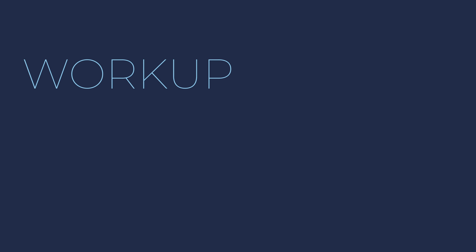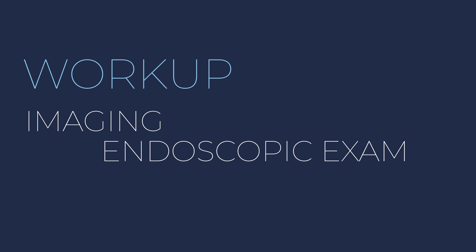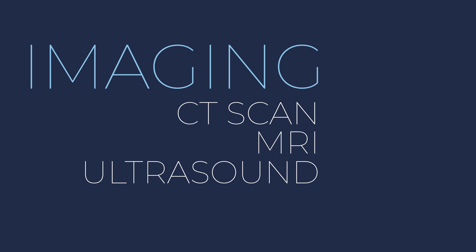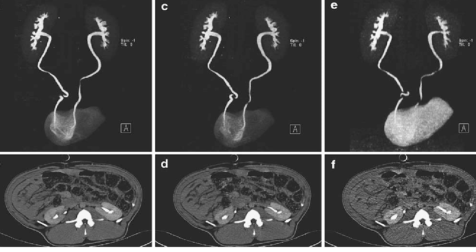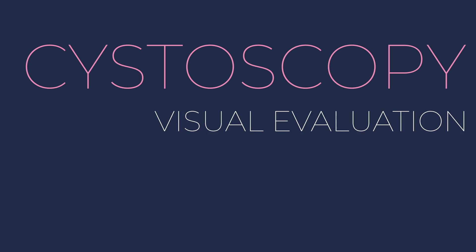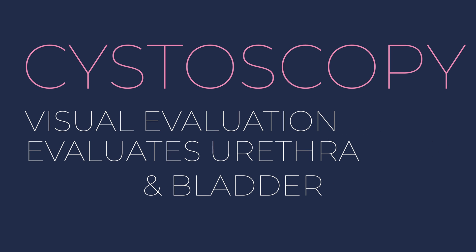Next, let's talk about the workup for hematuria. The workup consists of two important factors: imaging and an endoscopic evaluation with a camera. CT scan is the best imaging modality, but MRI or ultrasound can also be helpful — talk to your provider about which is best for you. These best evaluate the upper urinary tract, and here we can see a CT scan clearly outlining the anatomy quite well. The second important part of the workup is a cystoscopy — a small camera procedure that evaluates the lower urinary tract, providing a visual examination of the urethra and bladder. It can see very small tumors or very small sources of hematuria, better than any imaging test.